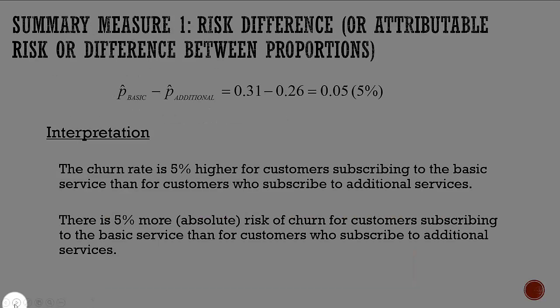So now we have two proportions. The difference between those two proportions is called the risk difference. One group had a churn rate of 0.31, the other 0.26 — that's a difference of 5%. So the churn rate is 5% higher for those subscribing to the basic service than those who subscribe to additional services.